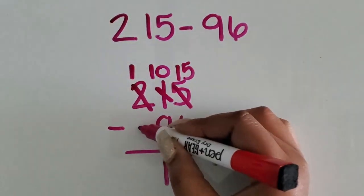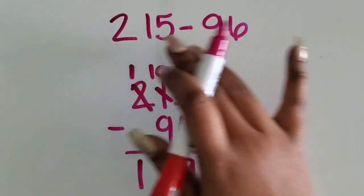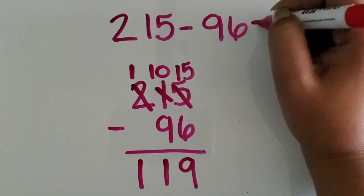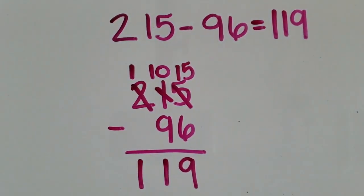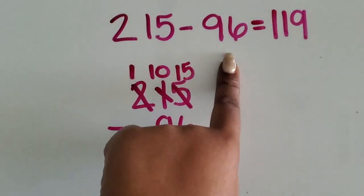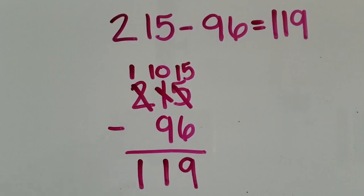One hundred minus no hundreds is one hundred. The difference between 215 and 96 is 119. We subtracted a two-digit number from a three-digit number using the standard and traditional algorithm.